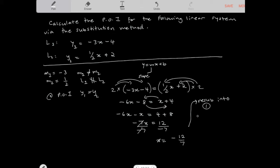So if I substitute this back into equation 1, you get y is equal to negative 3. Instead of x, I'm going to plug in negative 12 over 7. So you get negative 12 over 7 minus 4. So y here is equal to,